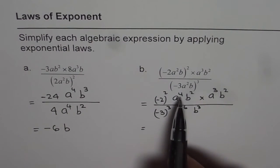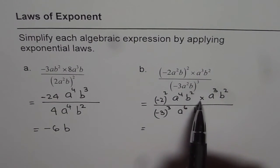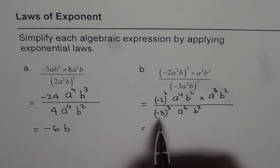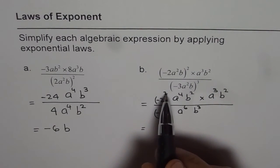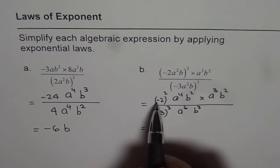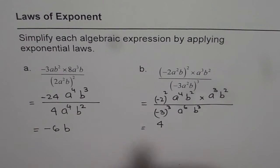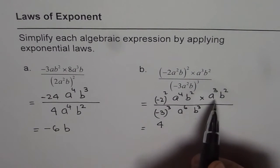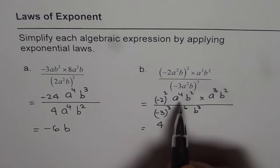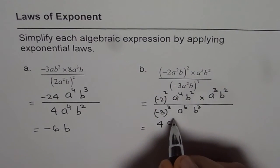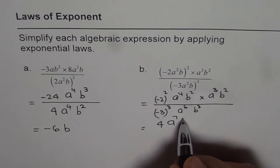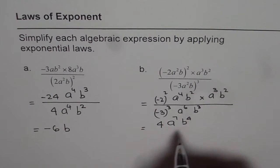So now we will combine, apply the product rule in the numerator. So we have minus 2 square. Whenever square is there, the negative things become positive, right? Minus 2 times minus 2 is plus 4. So we get 4 here. a is 4 and 3, so when you multiply, they get added up. So 4 plus 3 is 7, a to the power of 7. For b, it is 2 plus 2, which is 4.